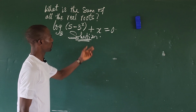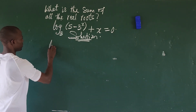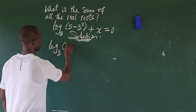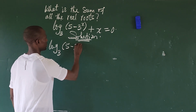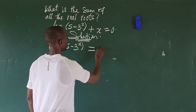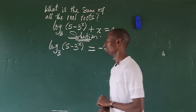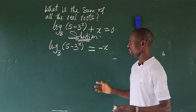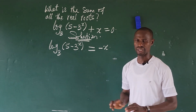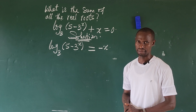So the first thing we're going to do here is to move the x to this side of the equation. This is going to give us log of 5 minus 3 to the power of x, plus bracket, equal to minus x. So what we do here is easy — we want to rewrite this in index form. We all know that there is a strong relationship between indices and logarithms.